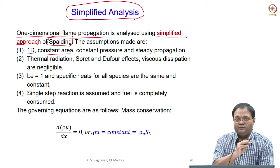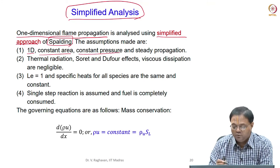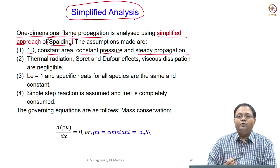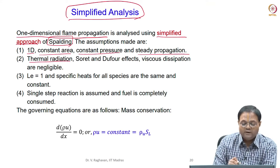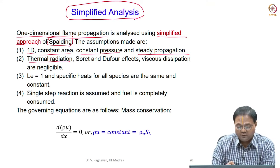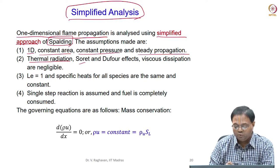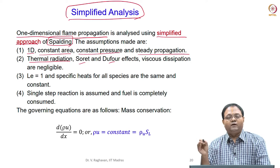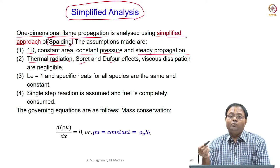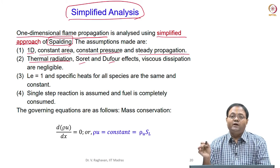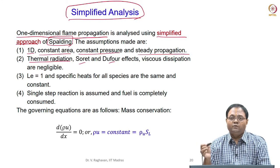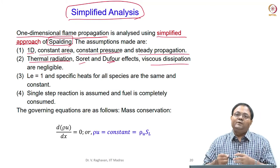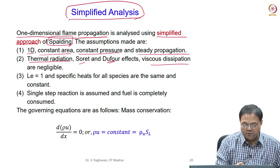A lot of assumptions have to be made for a simplified analysis where only a theoretical approach is used. These include: a one-dimensional constant-area duct in which the flame is propagating, constant pressure, steady propagation, no thermal radiation, no thermal diffusion (Soret effect), and no Dufour effect — where concentration gradients drive energy flux.